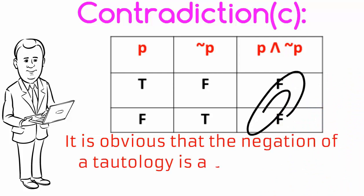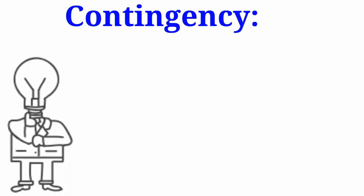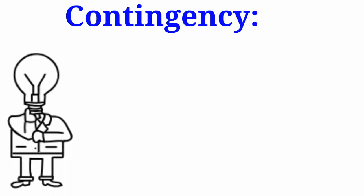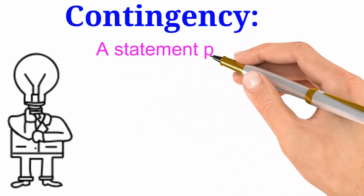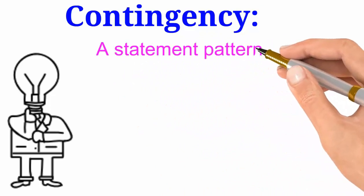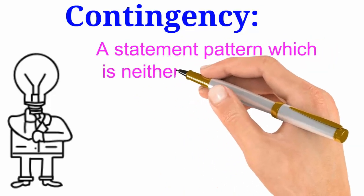It is obvious that the negation of a tautology is a contradiction and vice versa. Now we shall see contingency. A statement pattern which is neither a tautology nor a contradiction is called contingency.